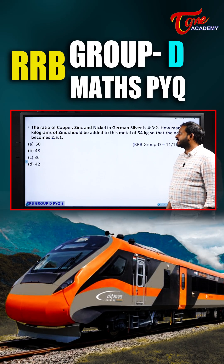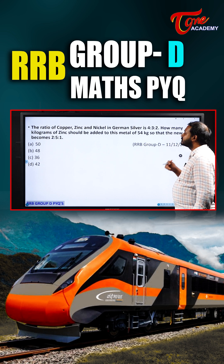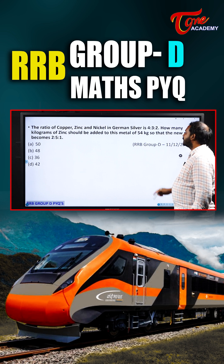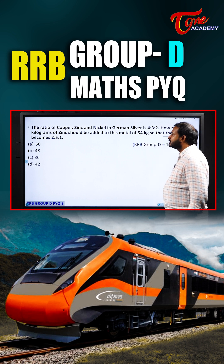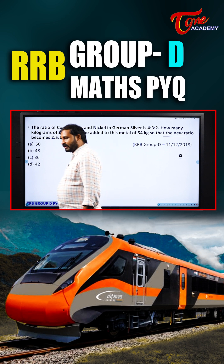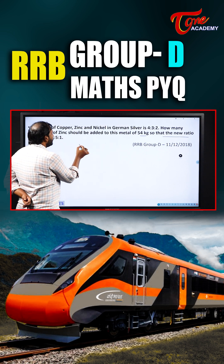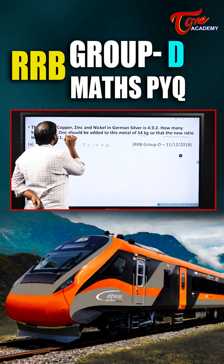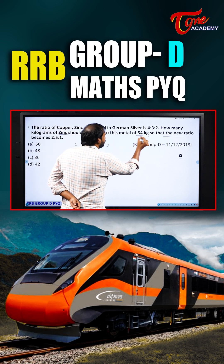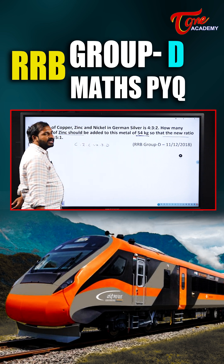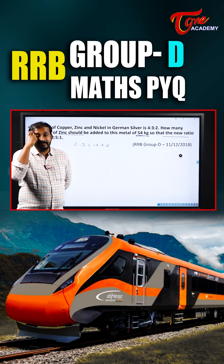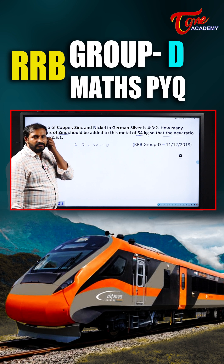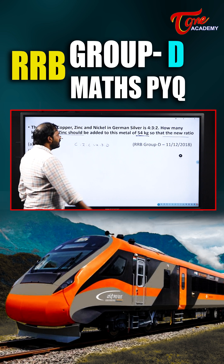The ratio of copper, zinc, and nickel — same students, please try to solve it differently. How many kilograms of zinc should be added to this metal of 54 kg so that the new ratio becomes 2:5:1? Currently, copper, zinc, and nickel are in ratio 4:3:2. The present metal is 54 kg, and the new ratio should become 2:5:1.